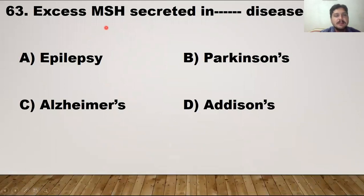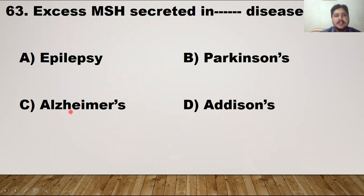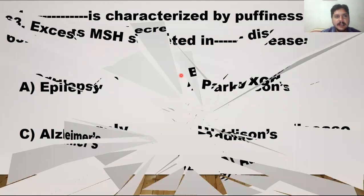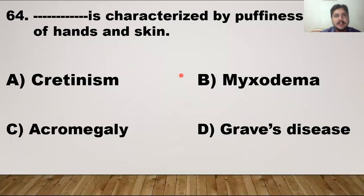MSH — melanophore stimulating hormone — is secreted in high amounts during which disease? Epilepsy, Parkinson's, and Alzheimer's are nervous disorders. The right answer is Addison's disease, in which MSH is released in high amounts.